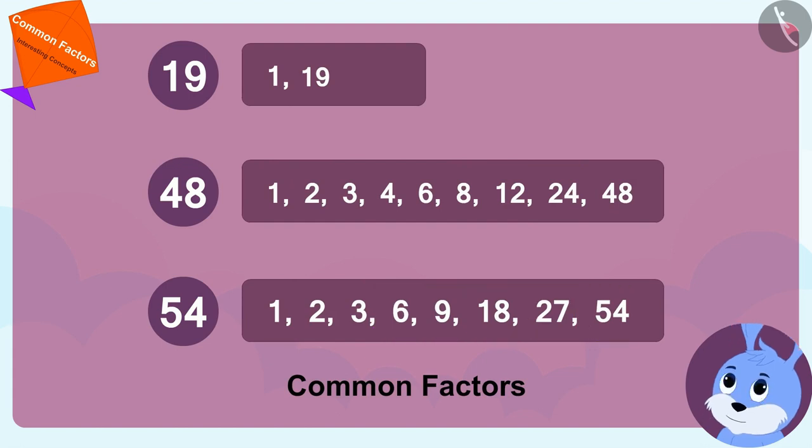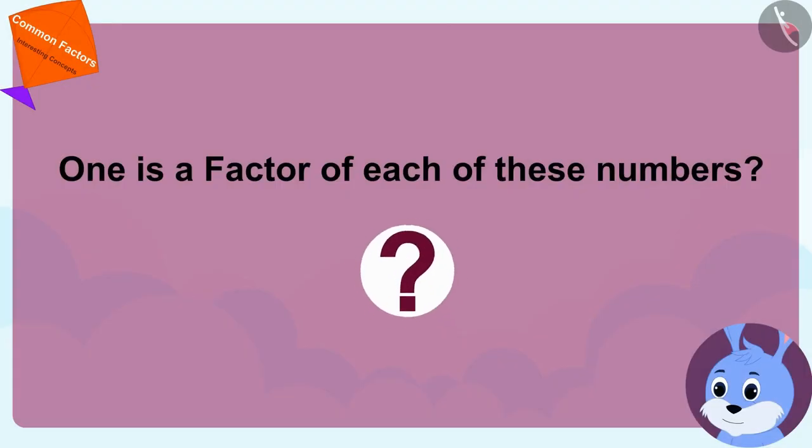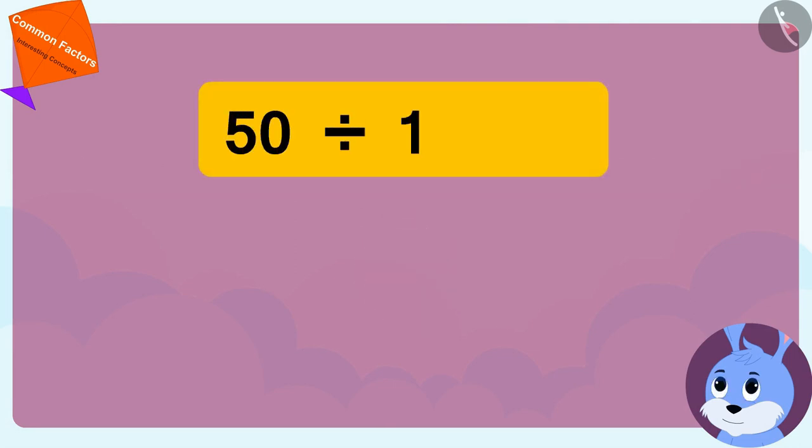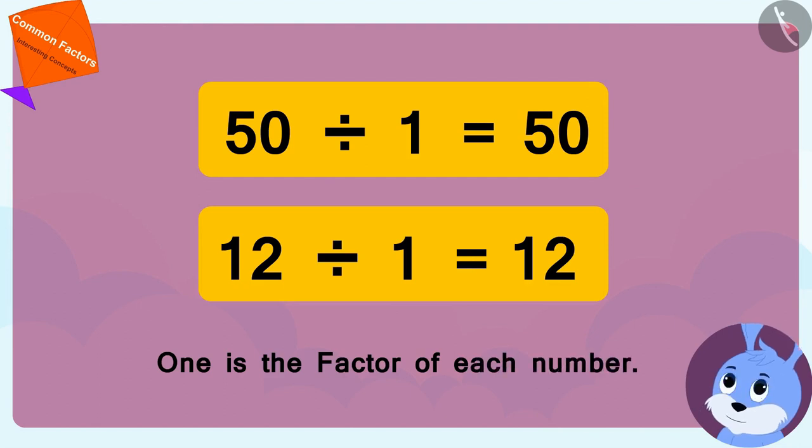Bunny is thinking: there is only one common factor of these numbers—one. How can it be possible that one is a factor of each of these numbers? Children, is what Bunny is saying correct? Is one a factor of every number? We can divide any number by one, so one is the factor of each number. Bunny's point is absolutely correct.